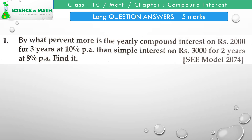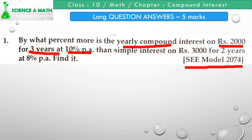Question number one: By what percent more is the yearly compound interest on rupees 2000 for 3 years at 10% per annum than simple interest on rupees 3000 for 2 years at 8% per annum? In this question, there is a sum of rupees 2000 compounded yearly for 3 years at 10% per annum, and another sum of rupees 3000 given at simple interest for 2 years at 8% per annum.